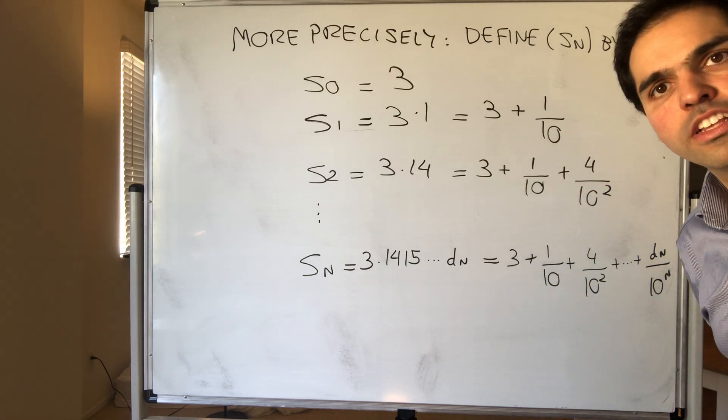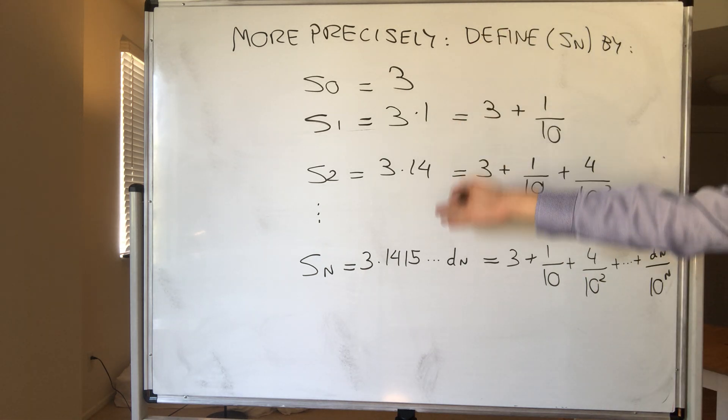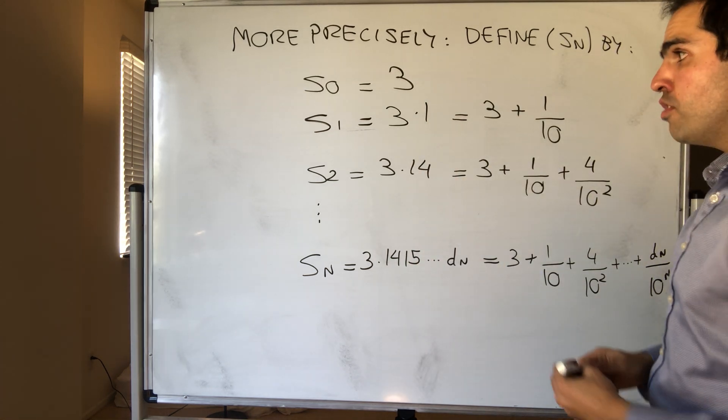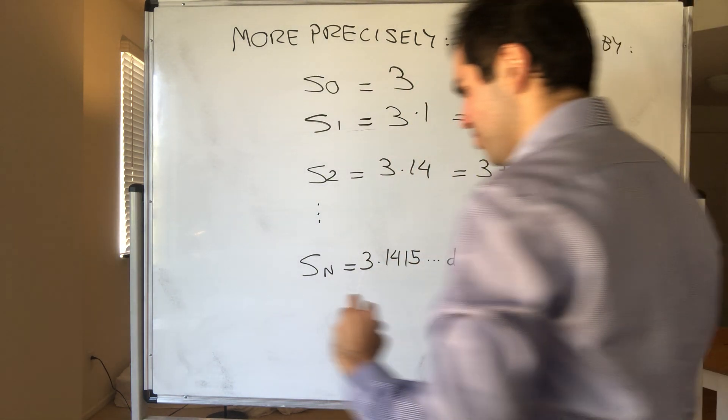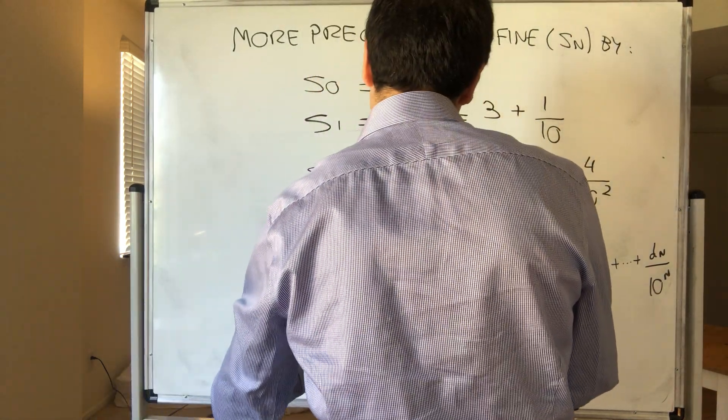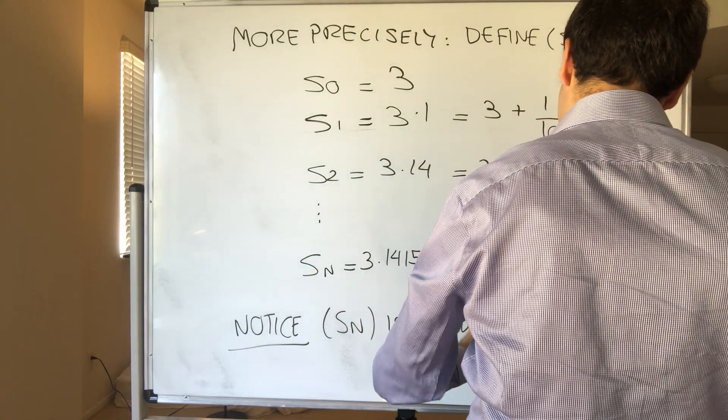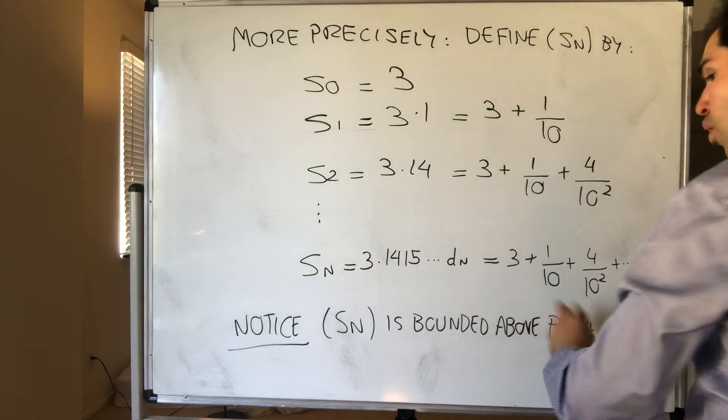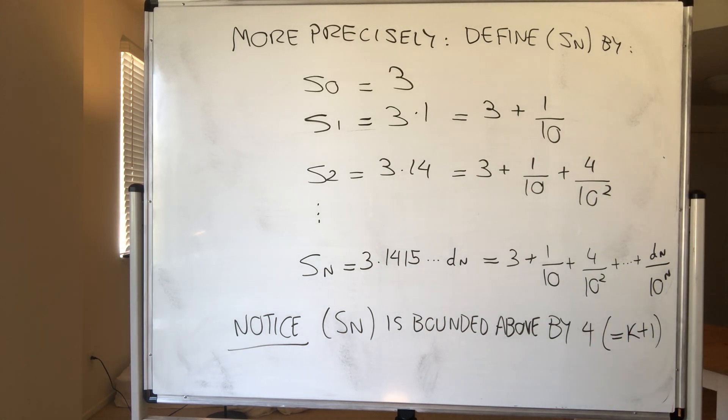This sequence isn't just an arbitrary sequence. It has some very special properties. First of all, notice this sequence is bounded above. All those numbers, they're actually smaller than 4, and that's guaranteed. So notice, not only is Sn bounded above, in this case by 4, but 4 is really 3 plus 1. So in general, it's k plus 1.